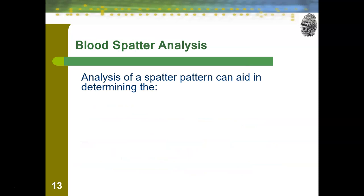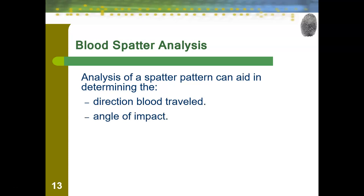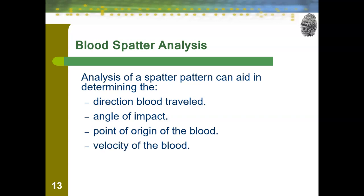When it comes to the analysis of blood spatter, we can determine the direction that the blood traveled, the angle of impact, the point of origin of the blood, the velocity of blood, and sometimes even the manner of death. Even if we don't have a body, if we have enough blood, we might be able to figure out how that person died.